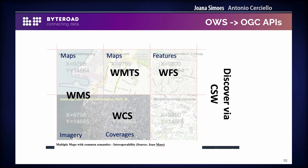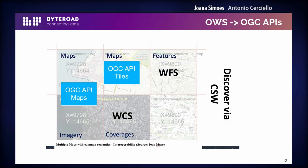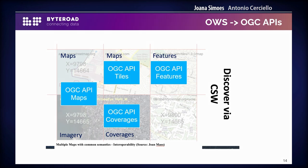This is the picture of some standards used in the first generation of web services. When you wanted to do an SDI, typically you would use WMS, WMTS, WFS, and WCS. In the new paradigm of OGC APIs, you would replace WMS with OGC API Maps, WMTS with OGC API Tiles, WFS with WFS3 — also called OGC API Features — and WCS with OGC API Coverages. All these services would be discoverable through an OGC API Records endpoint.